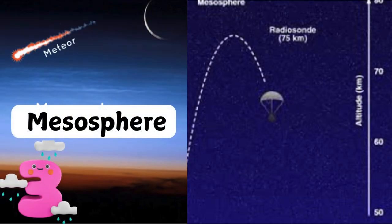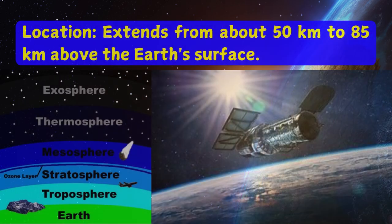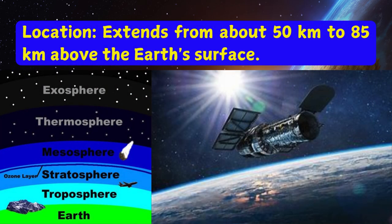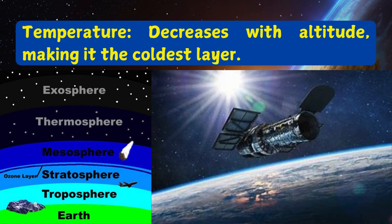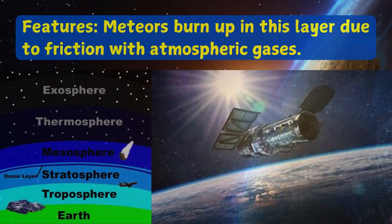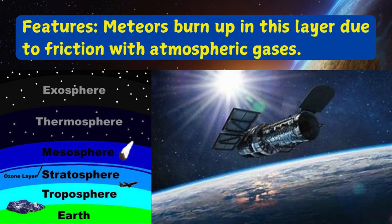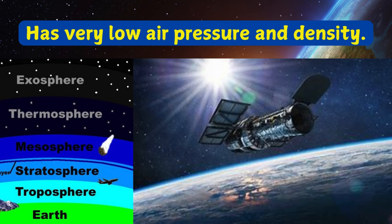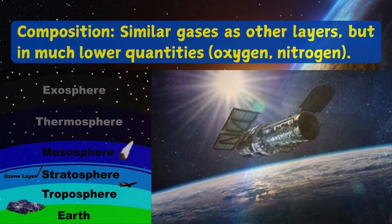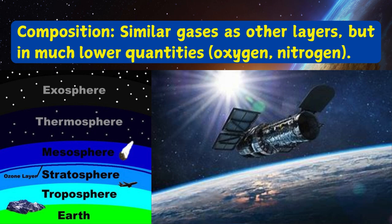Number three: Mesosphere. Location: extends from about 50 kilometers to 85 kilometers above the Earth's surface. Temperature decreases with altitude, making it the coldest layer. Features: meteors burn up in this layer due to friction with atmospheric gases; it has very low air pressure and density. Composition: similar gases as other layers — oxygen and nitrogen — but in much lower quantities.